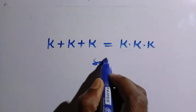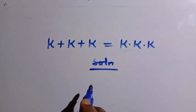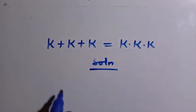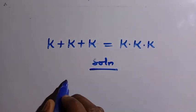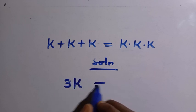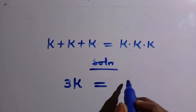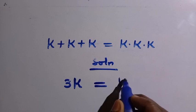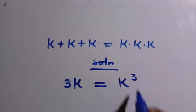So the first thing we are going to put here is a solution like this. We add K plus K plus K together, so here we have 3K equals. When we multiply K by K by K, we have K raised to the power of 3.